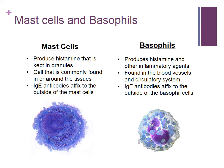The two types of cells that IgE antibodies affix themselves to are mast cells and basophils. Each of these cells contains granules of histamine. The significant difference between these two types of cells is their location: mast cells are commonly found in and around tissues, whereas basophils are found in the blood vessels and circulatory system.